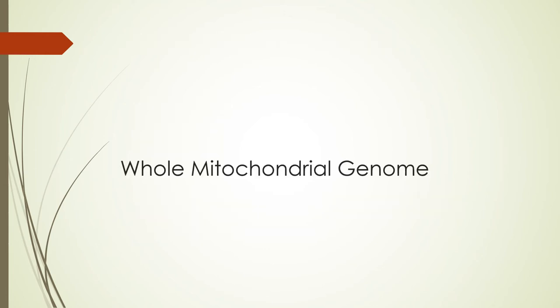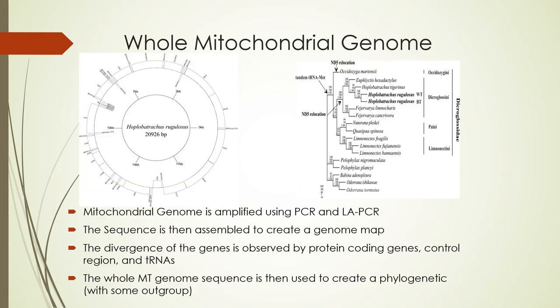This is the method for the whole mitochondrial genome analysis. First we amplify the gene using PCR and long-range PCR. After amplification, the sequences are assembled to create a genome map. Then we examine the divergence in each type of gene: first the protein-coding genes, then the control region, and then the tRNA. After that, the whole mitochondrial genome sequence is used to construct a phylogenetic tree.